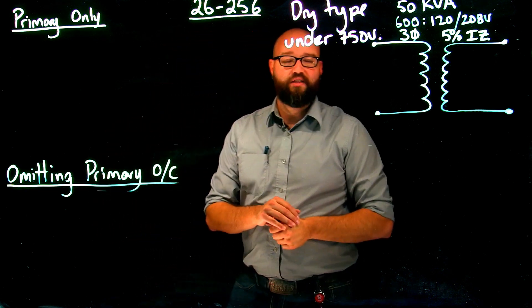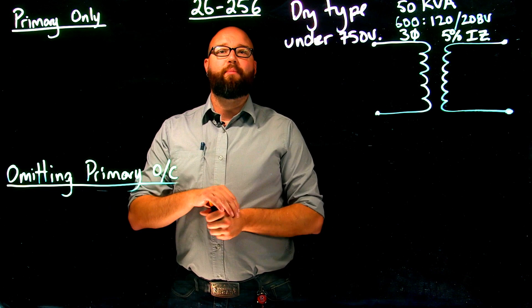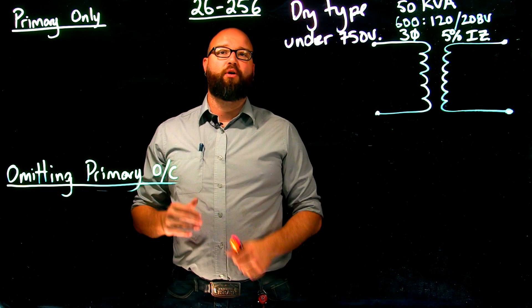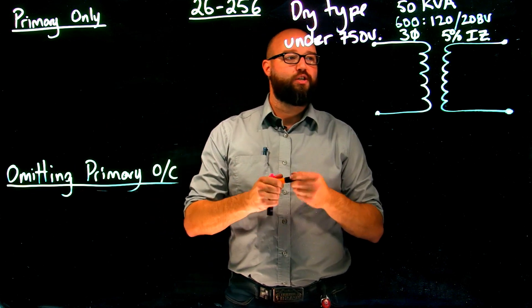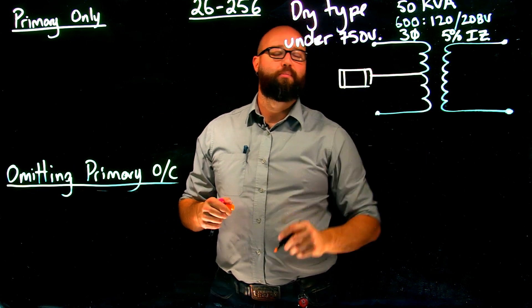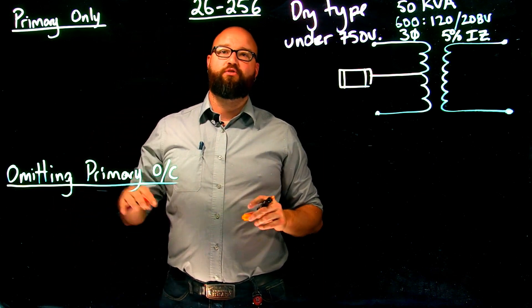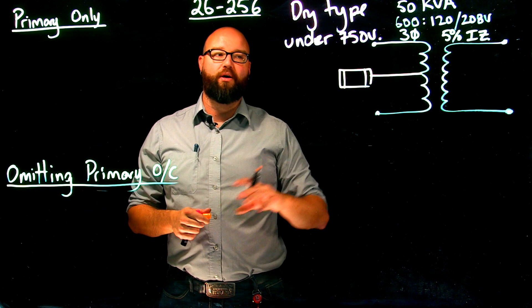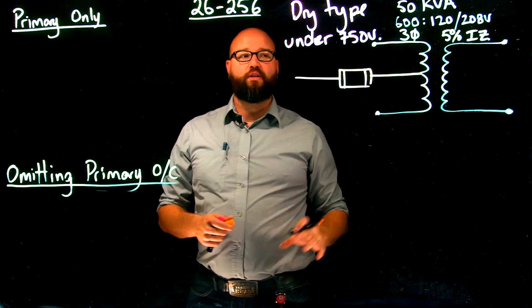So we'll start with the same scenario that we did in the last video, which is where we figured out the overcurrent for primary protection only. And when we say primary, we need to understand the difference between the primary protection, which is individual protection for transformer on the primary